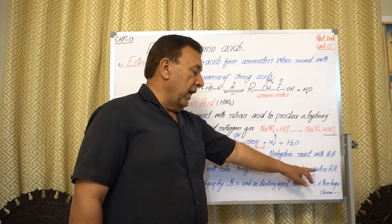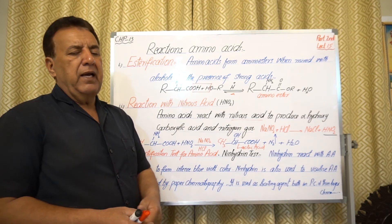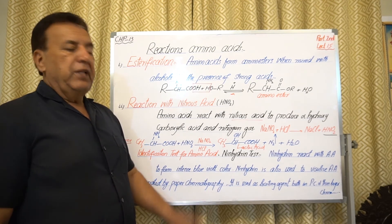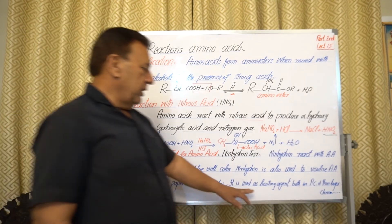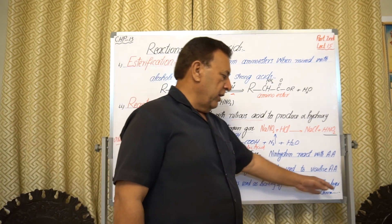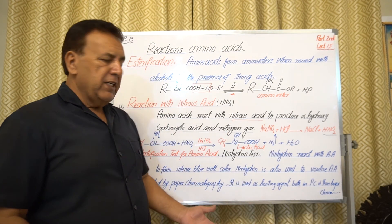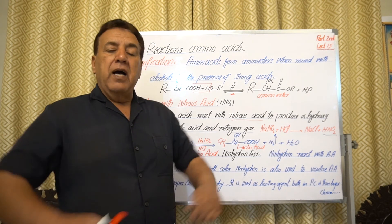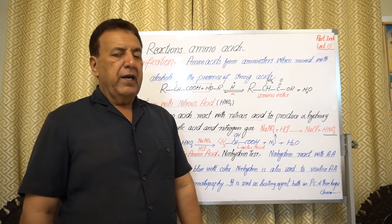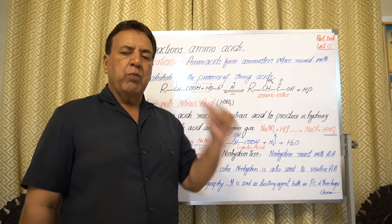Ninhydrin is also used as a locating agent in paper chromatography and thin layer chromatography to detect and locate amino acids on the chromatogram.